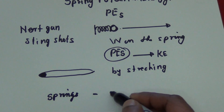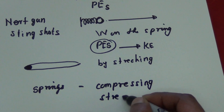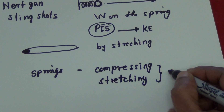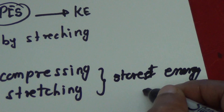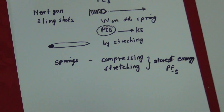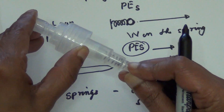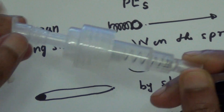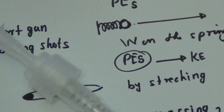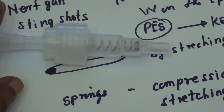In springs, by compressing or by stretching, you can store energy, which is going to be stored as spring potential energy. When the spring is in an unstretched position — we are not compressing and we are not stretching it — that position is called the non-stretchable or equilibrium position.